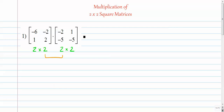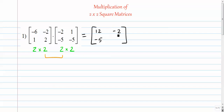To multiply these matrices, a lot of people make a really simple mistake by just multiplying the corresponding entries. So negative 6 times negative 2 is positive 12, and 1 times negative 5 is negative 5. These are common mistakes — it's not this simple. That is not at all the answer, so don't do that. It's not that easy.